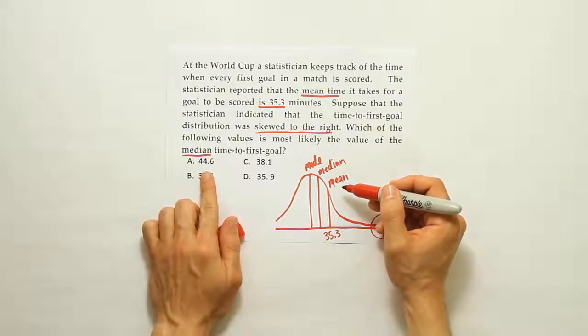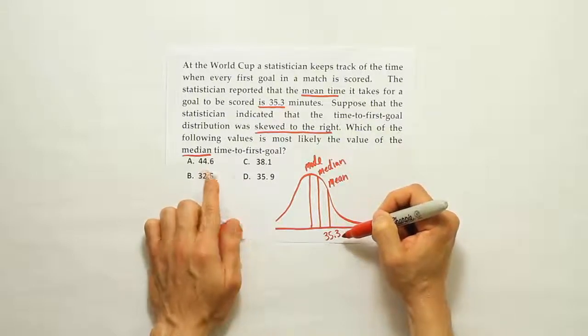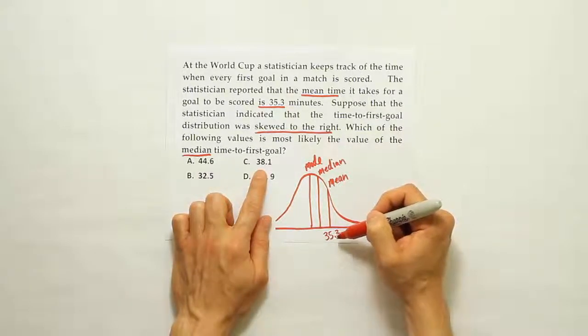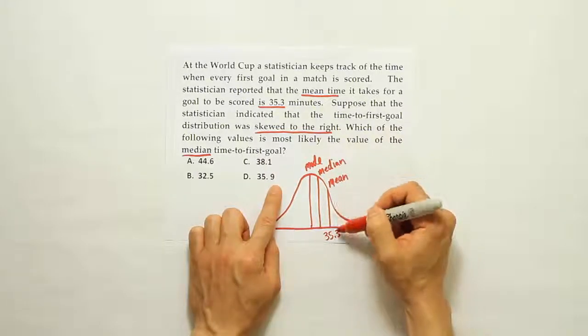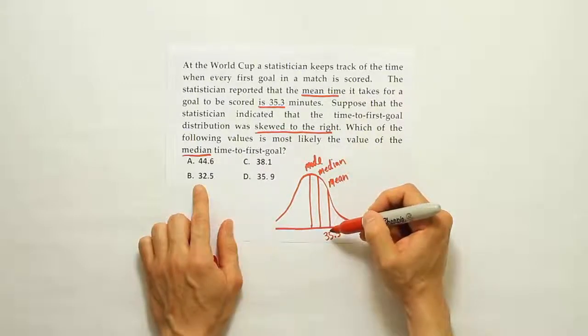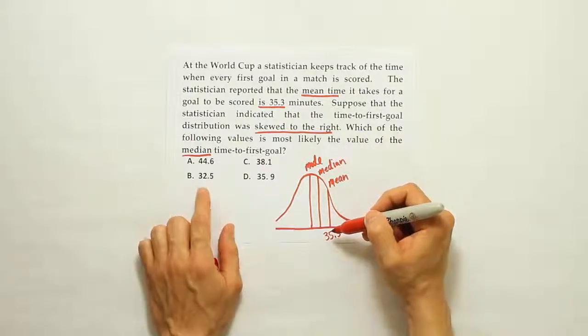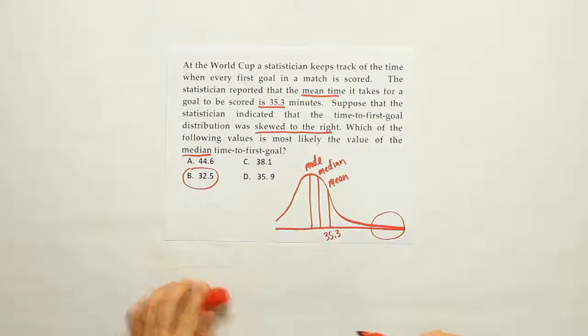Well, look at answer choice A. It's bigger than the mean, it's bigger than 35.3. So that can't be the median. Answer choice C is too big. That can't be the median. Answer choice D is a little bigger than the mean. Again, that'd be over here. That's not where the median is located. So only answer choice B makes any sense. That's the only possible answer. So we're going to take B as our answer choice. This is the only one of that list that could represent the median.